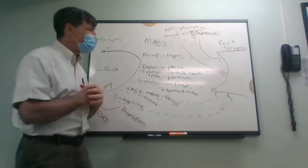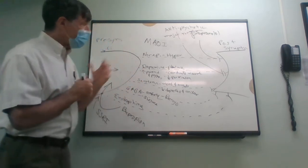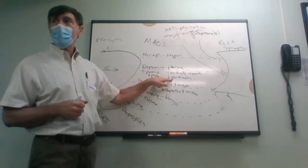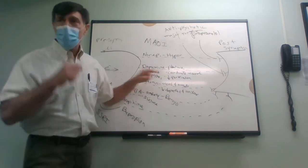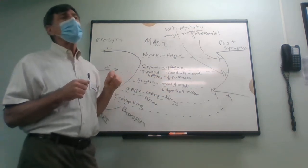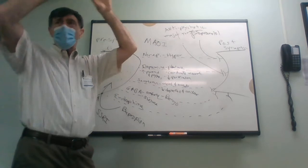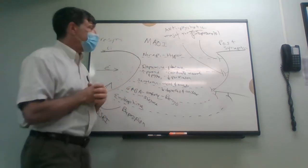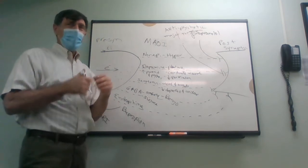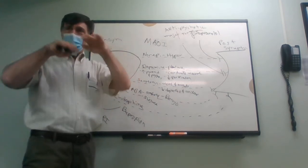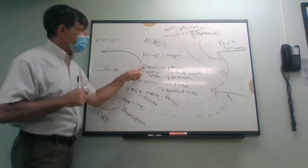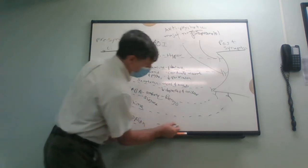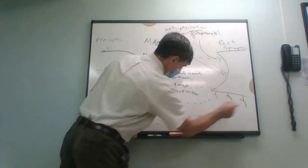If you knock down somebody's dopamine, you induce what we call pseudo-Parkinsonism. This falls under the category of EPS — extrapyramidal symptoms: aches, tremors, and things like that. Now remember, all these neurotransmitters are always in balance. We have to add another one: acetylcholine.